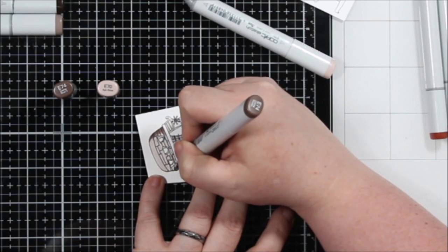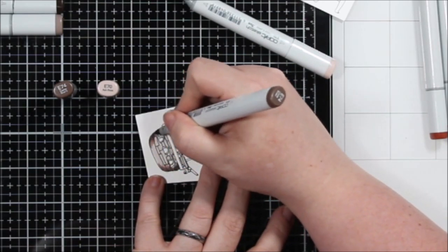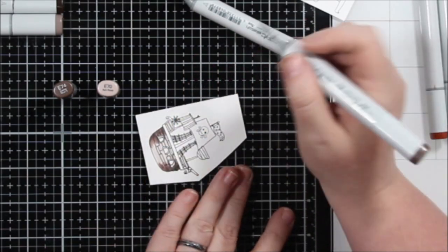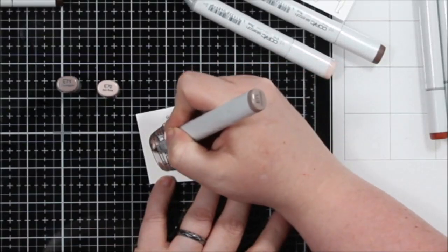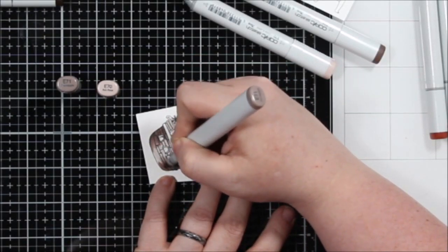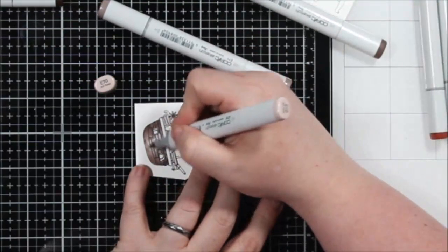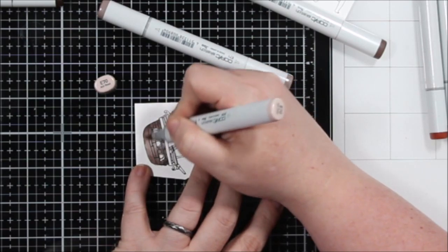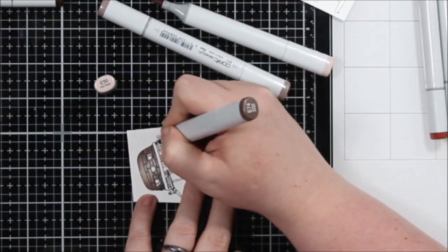And this is actually like a get well soon card, which I don't really make many of, but I think I should. This day and age get well soon cards are probably the best to have on hand. And this would be really cute for a kid. So I just used some Copic markers here to color my little ship. It's such a cute little set. These images are adorable.